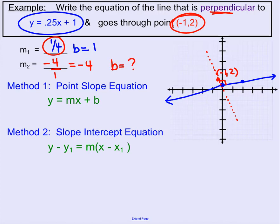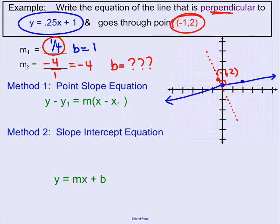Now again, we don't know what that y-intercept is, so we have to find out what it is. We have two methods. Method 1 is use your point-slope formula or method 2, slope-intercept form. I prefer method 2 because then you don't have to convert it to slope-intercept form to find that b.